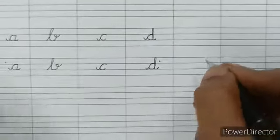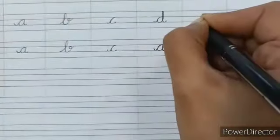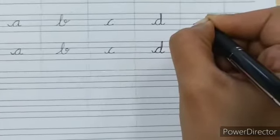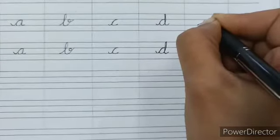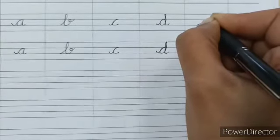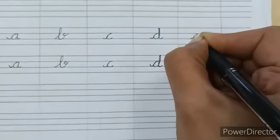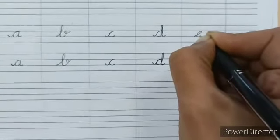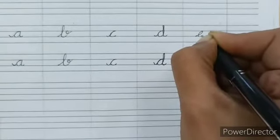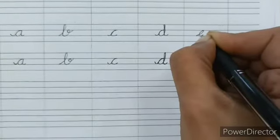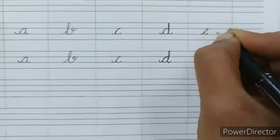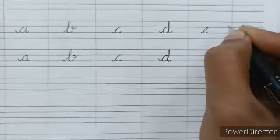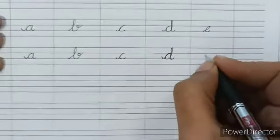Next letter is E. A slanting line from the third line which touches the second line. From there, we draw a C, a left curve which continues from the slanting line. The curve finishes at the third line. This is E.